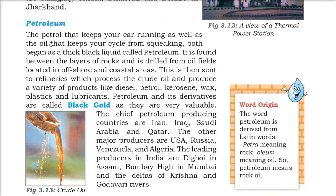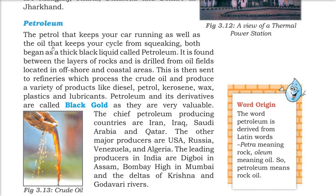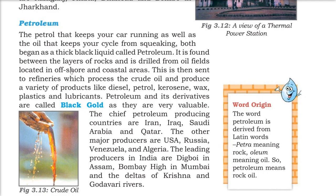Now let us talk about the black gold — petroleum. The word petroleum comes from the Latin words petra, meaning rock, and olium, meaning oil, so petroleum means rock oil. The petrol that keeps your car and bike running begins as a thick black liquid called crude oil. It is found between layers of rocks and is drilled from oil fields located in offshore and coastal areas. It is then sent to refineries, where it is processed to produce a variety of products like diesel, petrol, kerosene, wax, plastics, and lubricants. Because of these valuable derivatives, petroleum is called black gold.